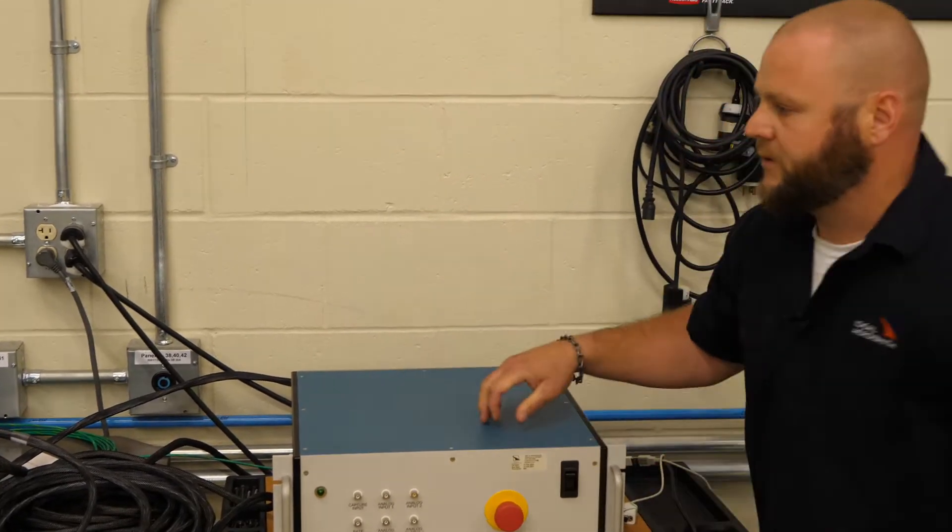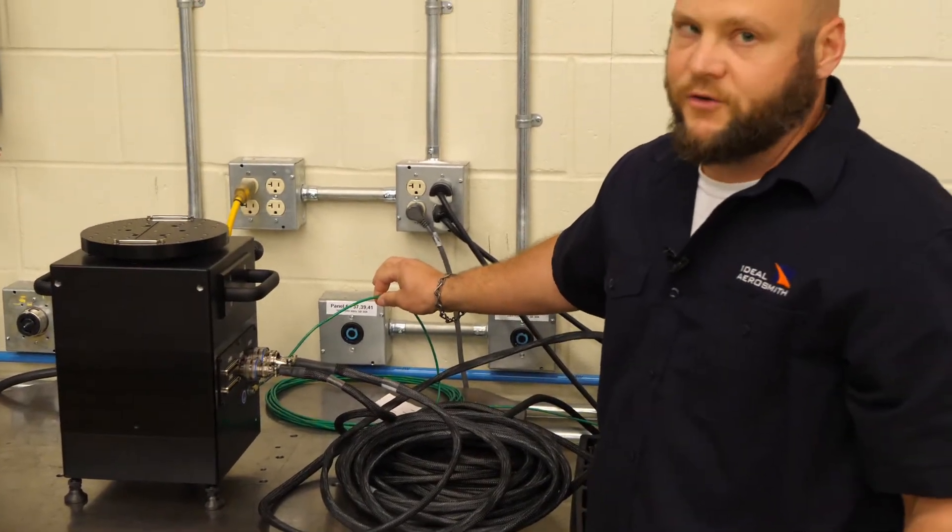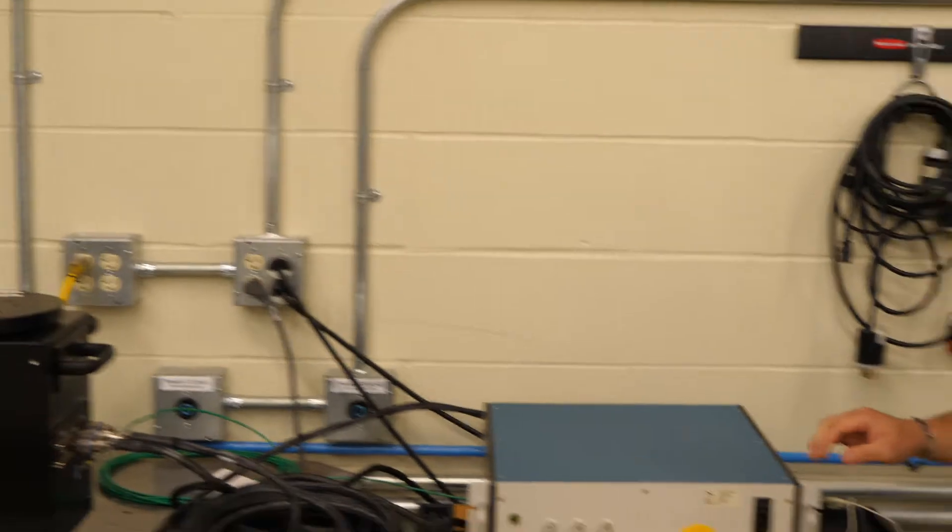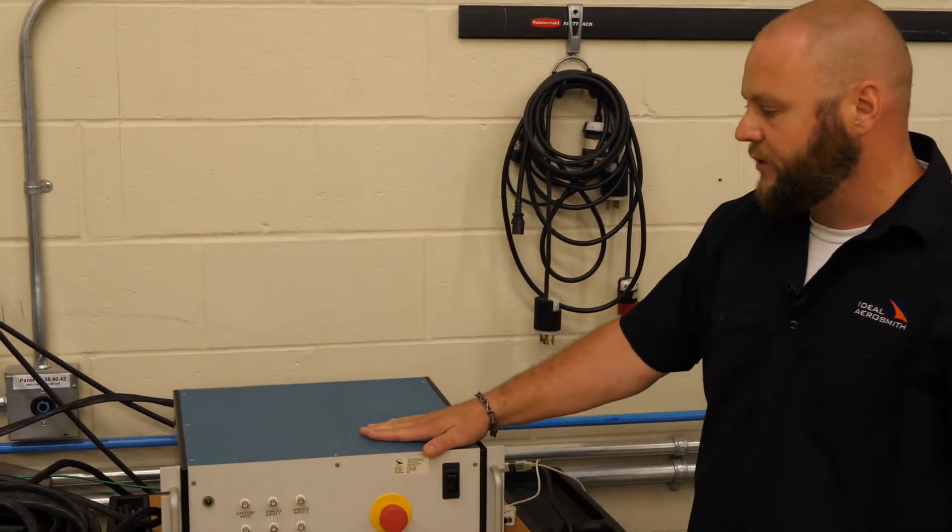The third cable, which I've already connected to the rate table, is a simple ground strap. Once those are connected, we'll connect power to the controller.